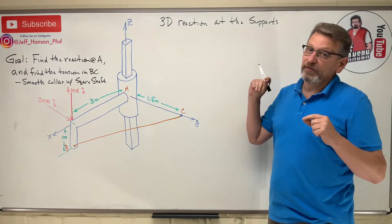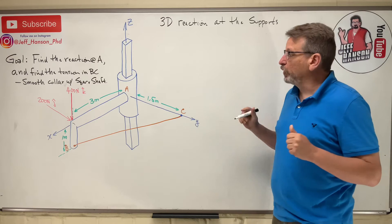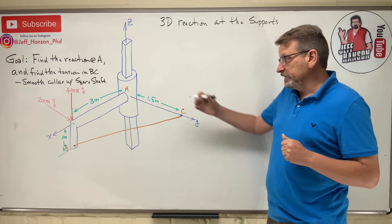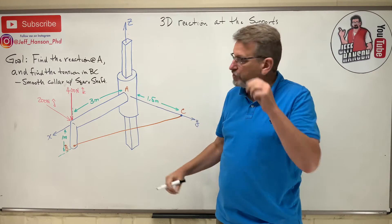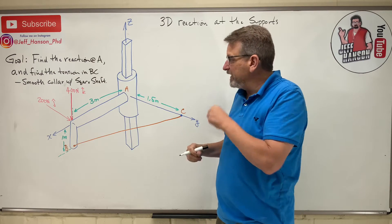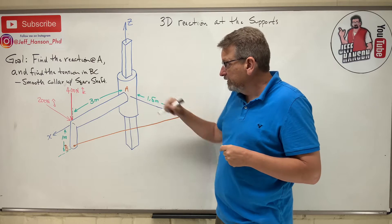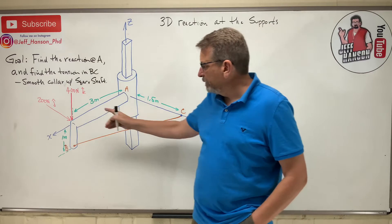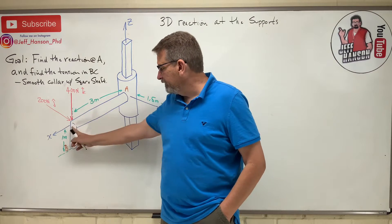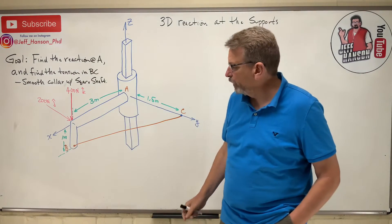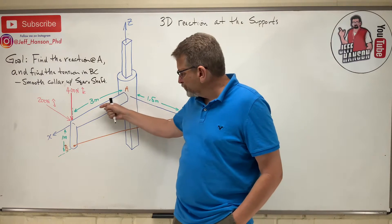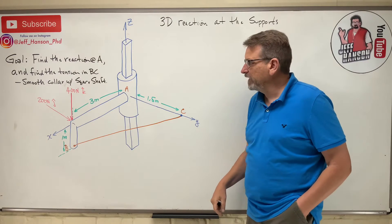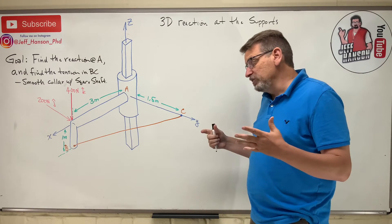Welcome back — we're doing 3D reactions at the supports today. We have a collar that slides over a square shaft, and we want to find the reactions at point A and the tension in this cable. There are a couple of applied loads at this knuckle or joint. The bar goes straight down the x-axis and then turns in the negative z direction.